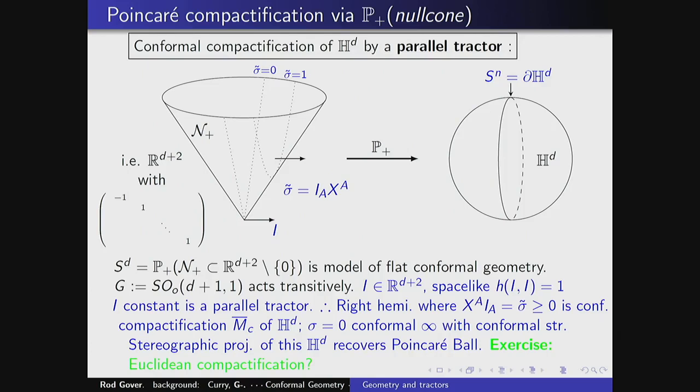Let's go back and start understanding those compactifications. We want to use both our simple understanding of the models and what we've just learned about tractors. Yesterday I explained that the conformal sphere is born by taking the ray projectivization of the null cone. We equip ℝ^{d+2} with a Lorentzian metric, take the forward null cone, take the ray projectivization, and get a sphere with a conformal structure, because each section of this projectivization determines a metric and different choices give conformally related metrics.